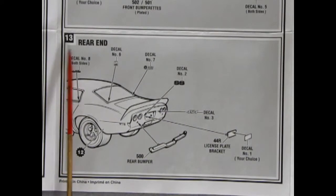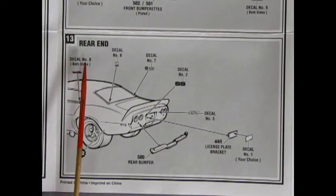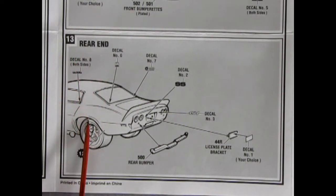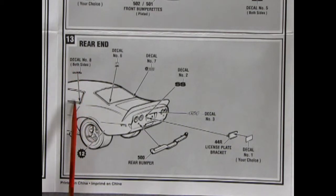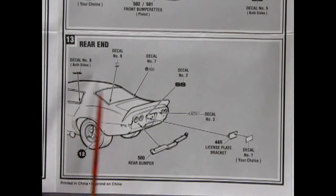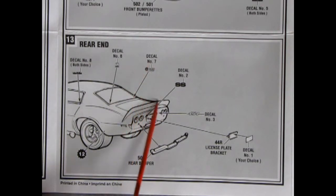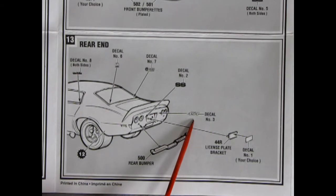And here is step 13, Monster Hobbies number, with the rear end. So, here there's some decals that go on. It says both sides, decal number 8, decal number 6 is going here on the window. So, I guess these are window decals. Decal 7, the SS Camaro 1 going back here, 454.